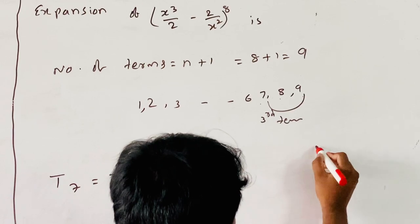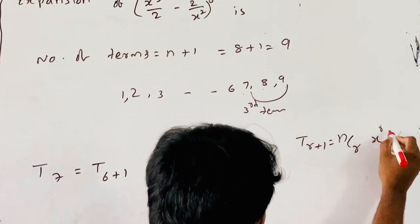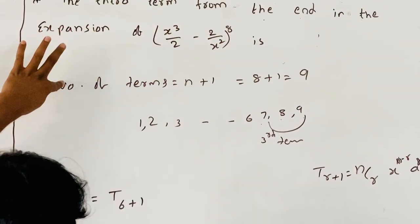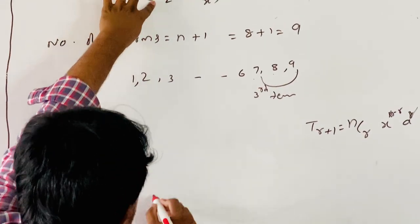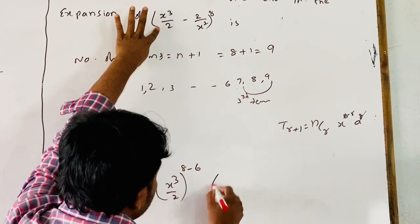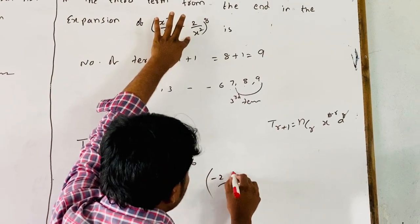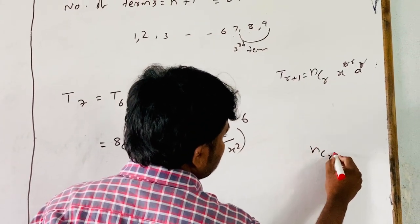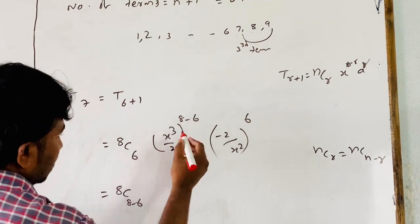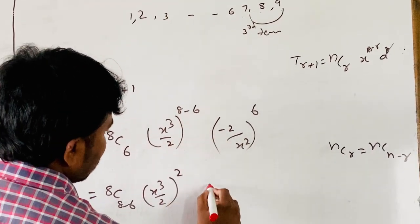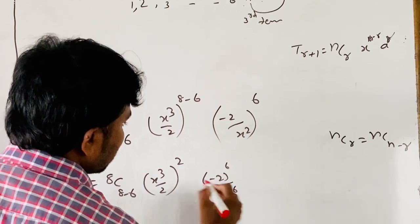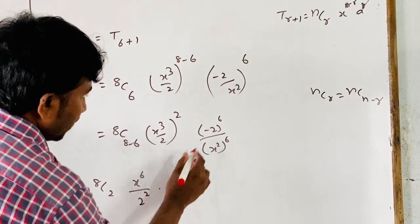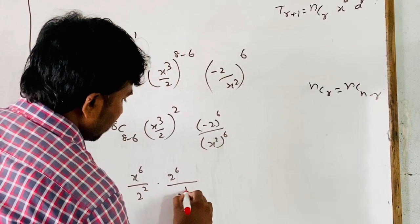T(6+1) = 8C6 * (x²/2)^(8-6) * (-2/x²)^6. Using nCr = nC(n-r), 8C6 = 8C2. So T7 = 8C2 * (x²/2)^2 * (-2/x²)^6 = 8C2 * (x^4/4) * (2^6 / x^12). Now 8C2 = (8×7)/(2×1) = 28.